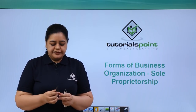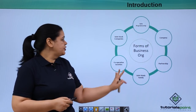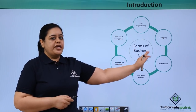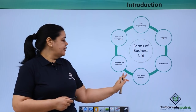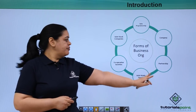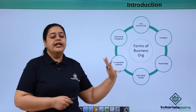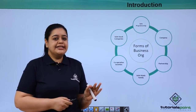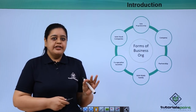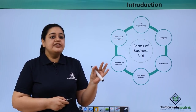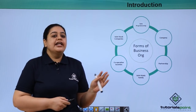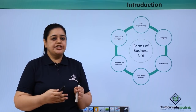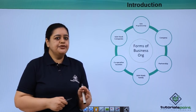Moving forward, let's see what are the different forms of business organization. As you can see here, we have sole proprietorship, a company, a joint stock company, a cooperative society, a joint Hindu family, and a partnership. Each one of these forms has its own merits and demerits. We are going to understand each form, look at a live example, discuss real-life examples, and see the features, merits, demerits, distinctions, and which size of business each form is useful for.